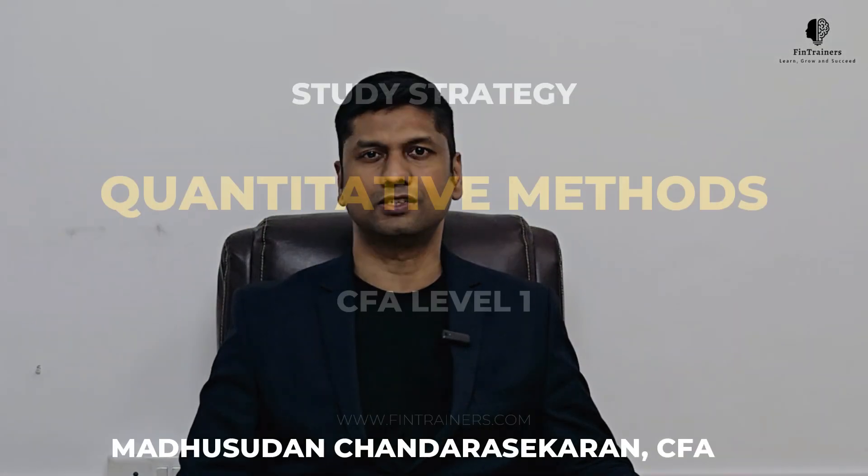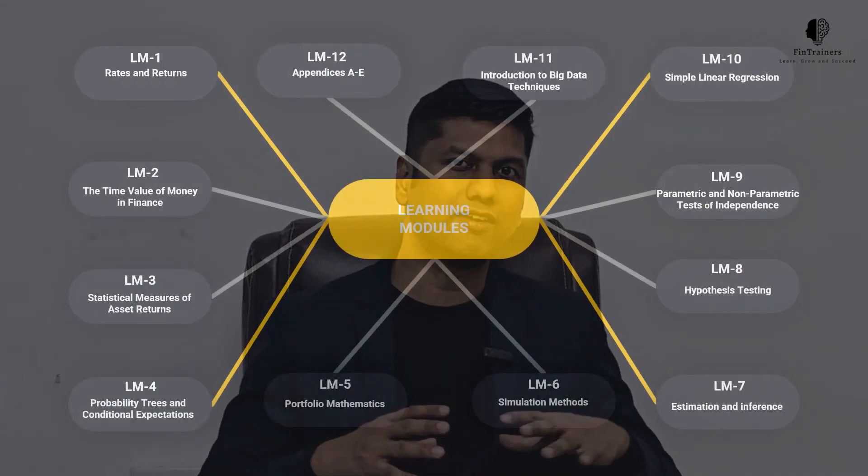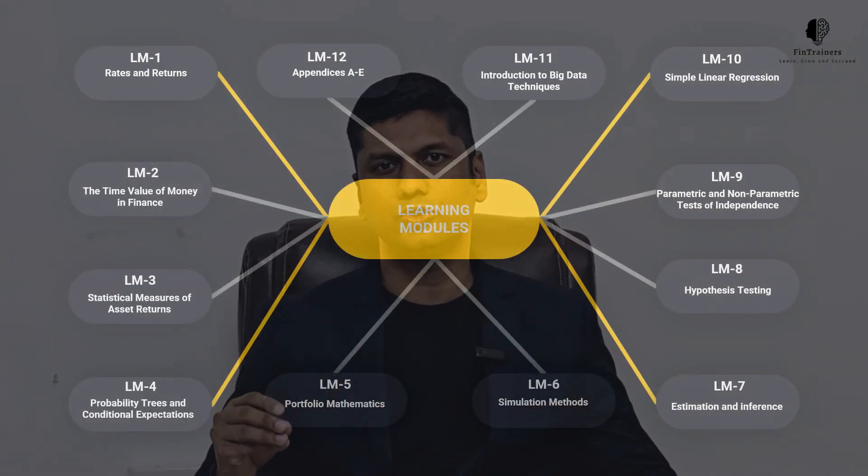Hi, today we are going to be looking at the CFA Level 1 Quant Study Strategy. Quant has 11 learning modules. It has a weightage of 6 to 9%. Some of the Quant topics have been moved to the prerequisite. I have created a video about the prerequisite — if you want to watch that, click there. Now, looking at these 11 topics, how should we attack it?